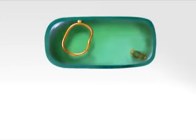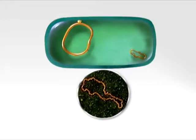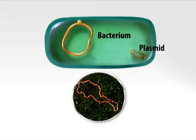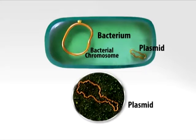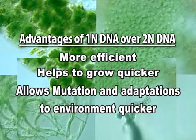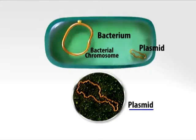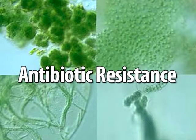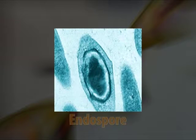Bacteria do not have a nuclear membrane or defined nucleus; instead they have a nucleoid where bacterial DNA is found. DNA exists in two locations: in the circular chromosome, which may be attached to the cell membrane, or in much smaller unattached circular plasmids. Bacterial DNA is circular and haploid. The advantages of haploid DNA over diploid are that it is more efficient, allows quicker growth, and enables faster mutations and adaptations to the environment. Plasmids are important as extra-chromosomal circular DNA involved in antibiotic resistance.